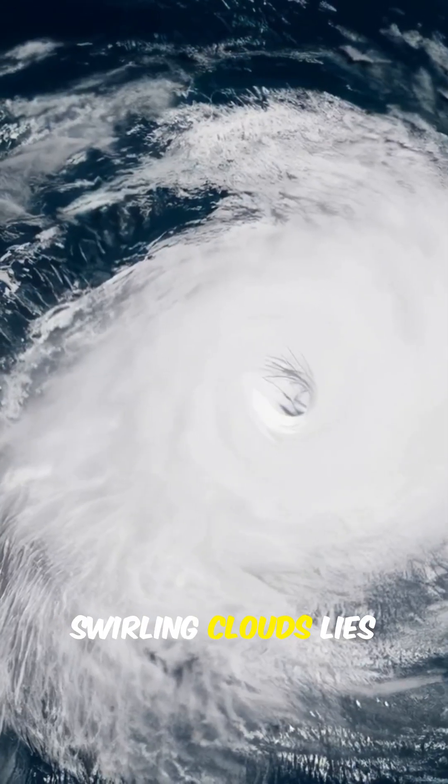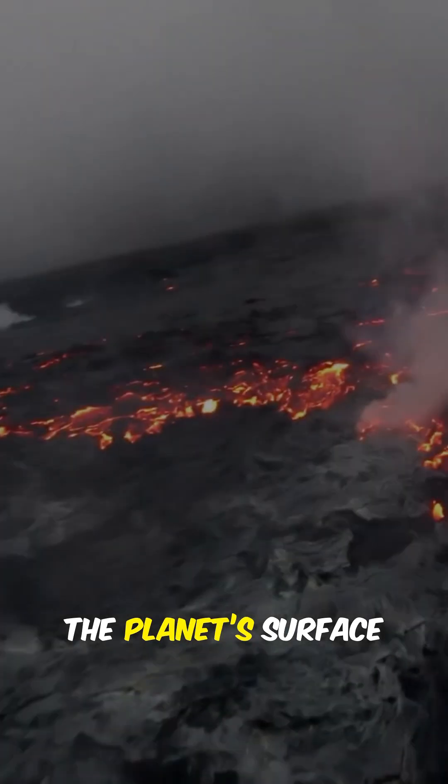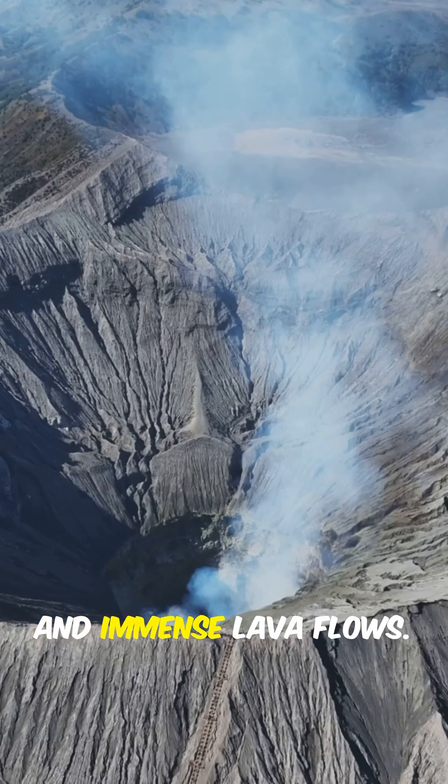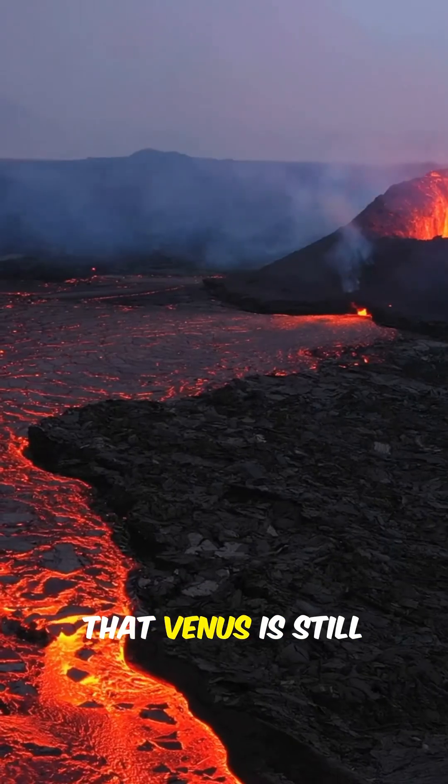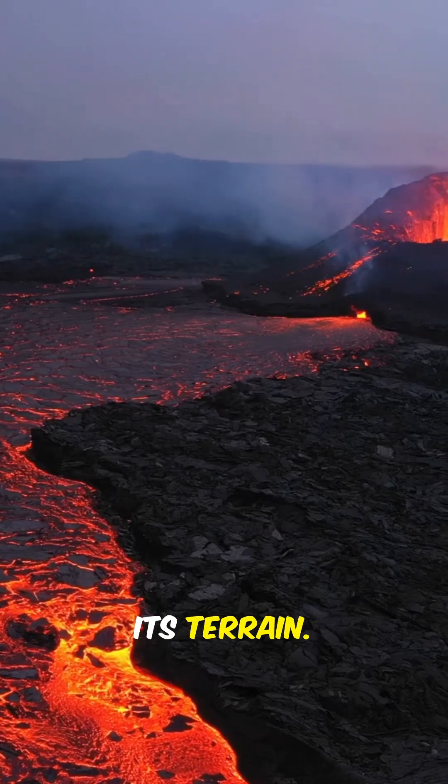Beneath Venus's swirling clouds lies a landscape straight out of a sci-fi nightmare. The planet's surface is covered with vast volcanic plains, towering mountains and immense lava flows. Scientists believe that Venus is still volcanically active, with rivers of molten rock shaping its terrain.